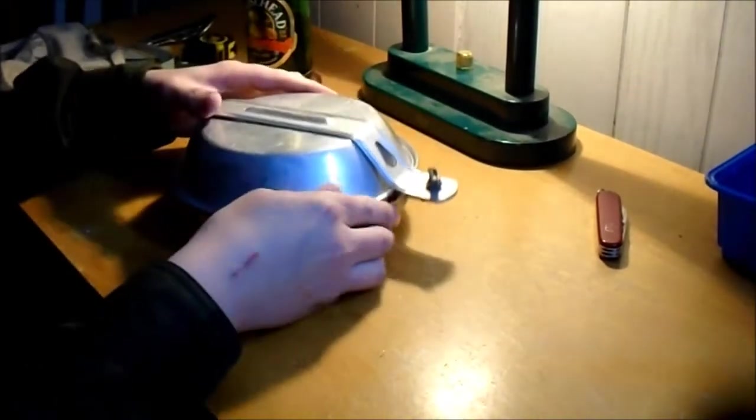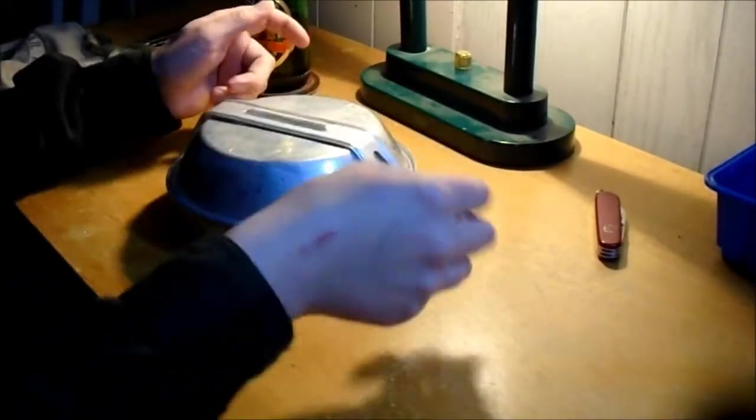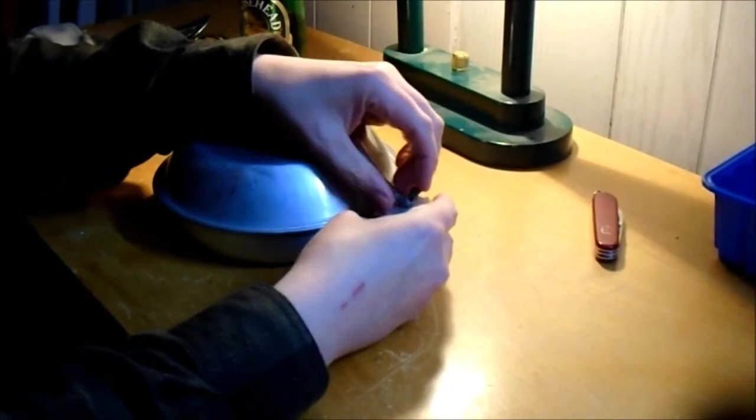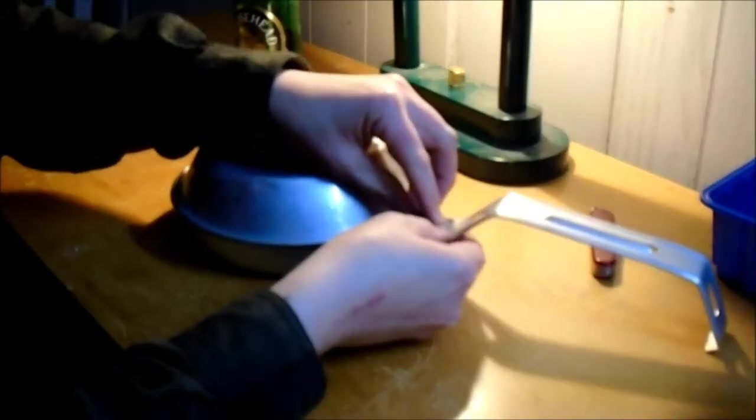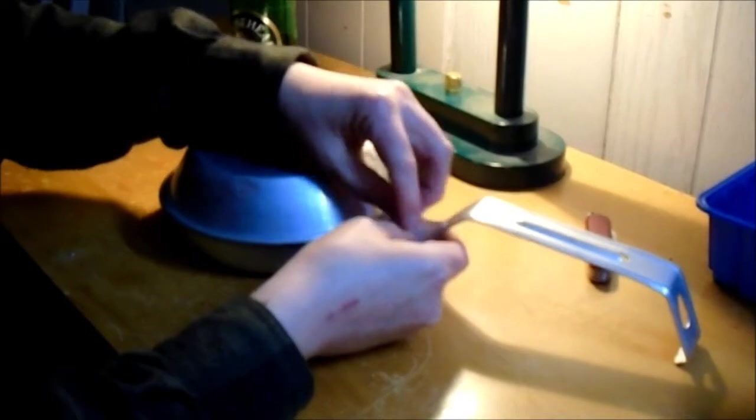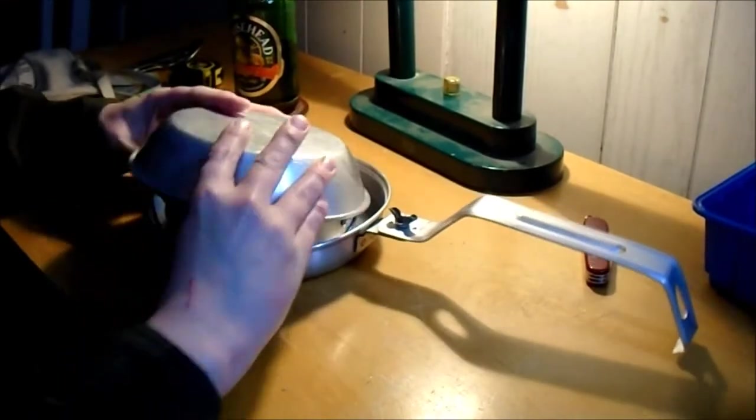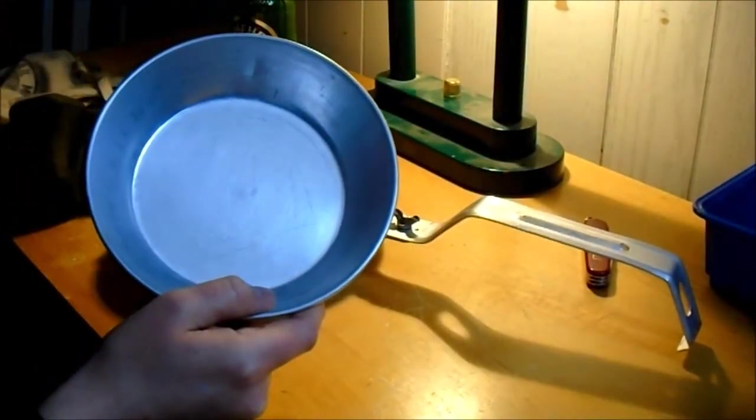You've got this little wing nut here, holds the, it's part of the handle for the fry pan. Just loosen it a little bit, and you can take that back up. So you get a plate with it.